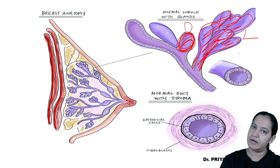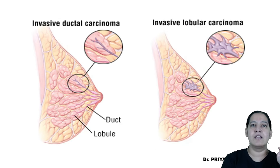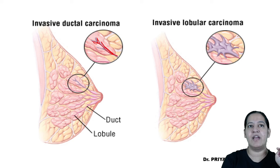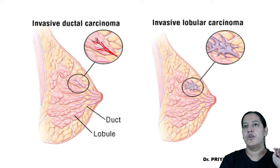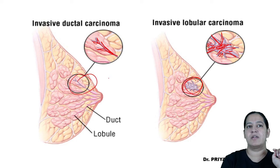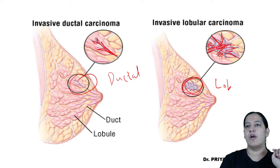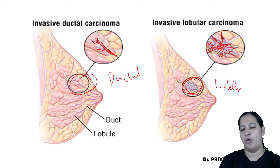See this diagram — this is a duct. If carcinoma involves a single duct, it is ductal. If it is involving the entire lobule — multiple ducts which open in a single terminal duct — it is lobular. So ductal means involving a duct, lobular means involving the entire lobule. Tumor cells traveling in one duct is ductal; tumor cells involving the entire lobule is lobular.